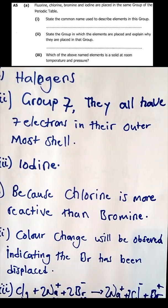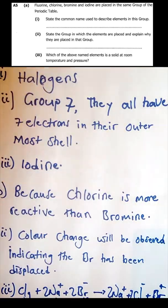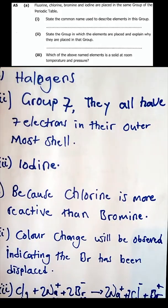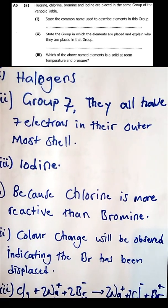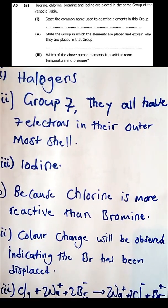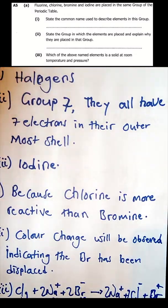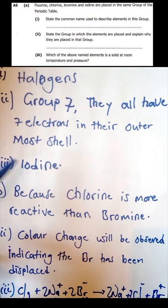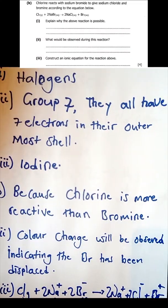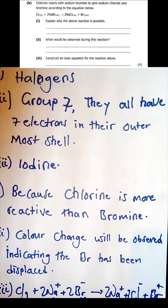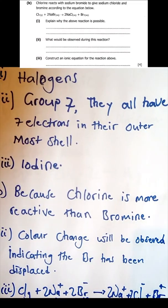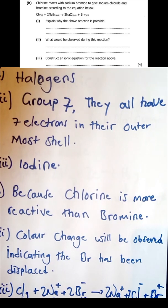Which of the above named elements is a solid at room temperature and pressure? Among the halogens, the element which is a solid at RTP is iodine.